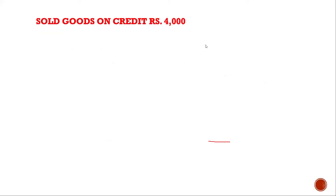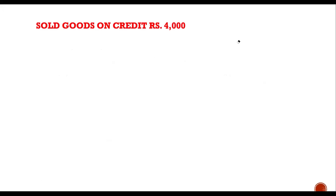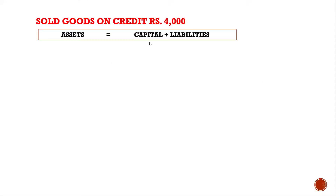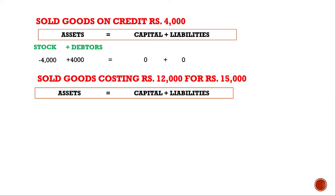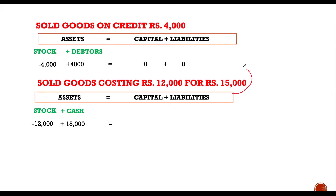Sold goods on credit: if no cost price is given but only selling price of rupees 4,000, then we deal directly with the selling price. Stock will decrease by 4,000 and since we are selling on credit, debtors will rise by 4,000 without affecting capital and liability. Again, sold goods costing 12,000 for rupees 15,000: stock decreases by cost of 12,000 and cash increases by 15,000 — this time it is not on credit, goods are sold on a cash basis.